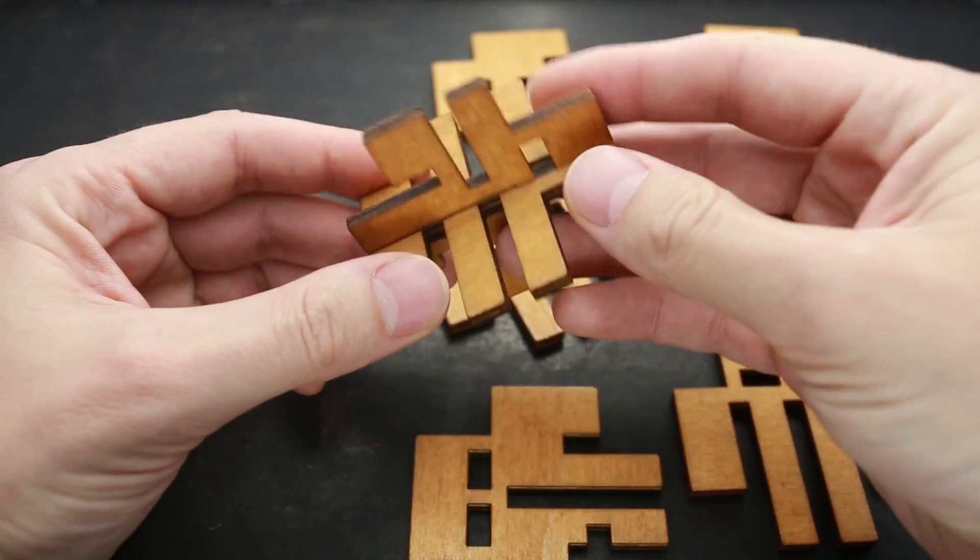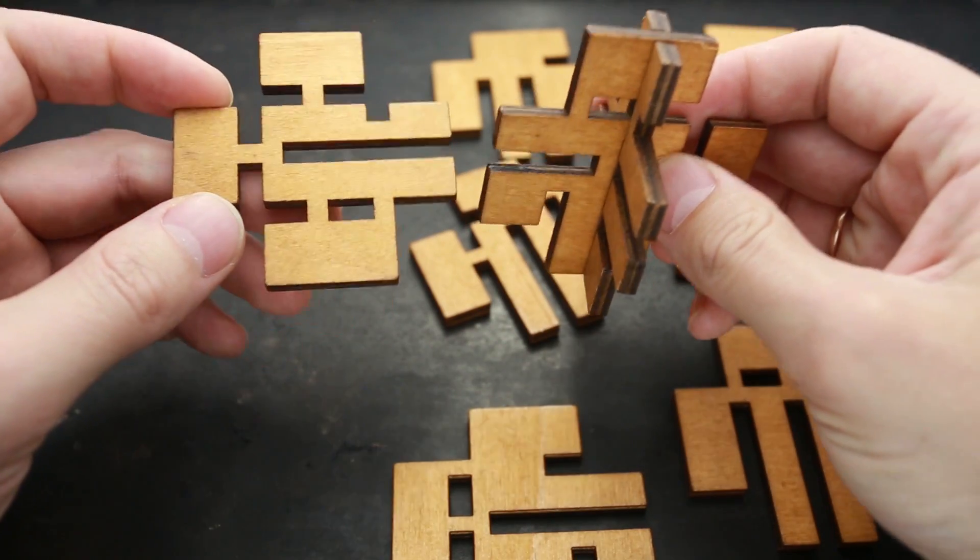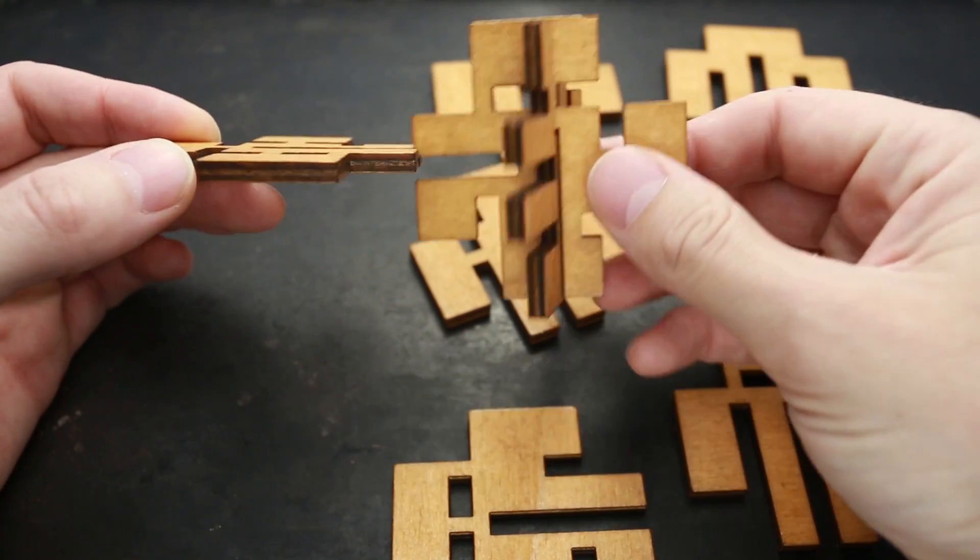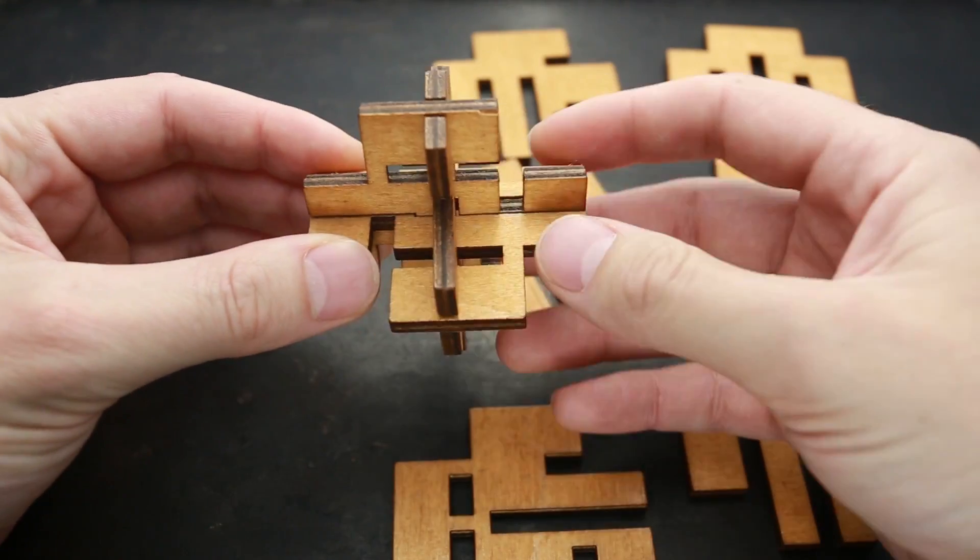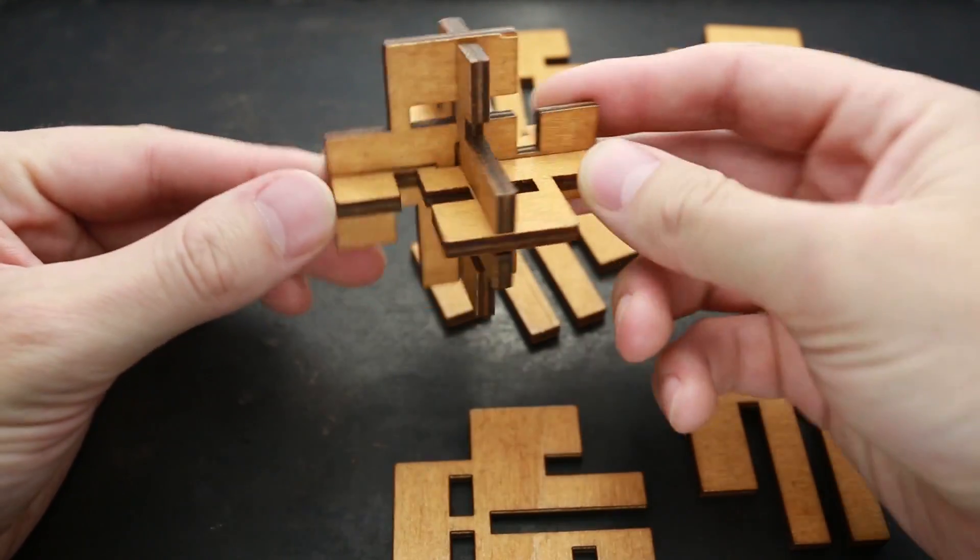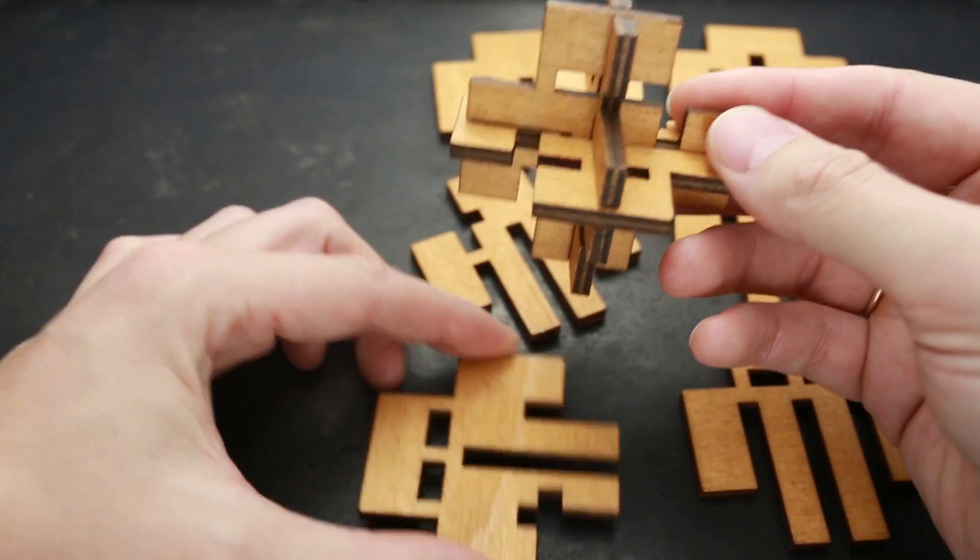And next, what you have to do is to grab this part and put it like this. As you can see, we have like a three dimensional cross right now.